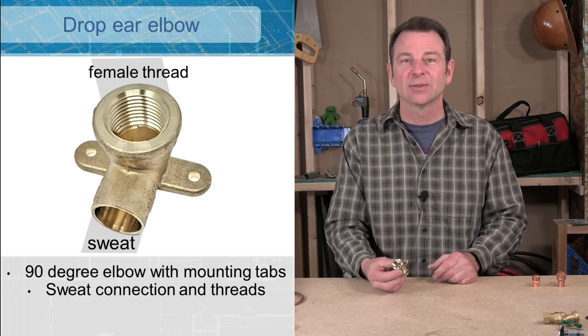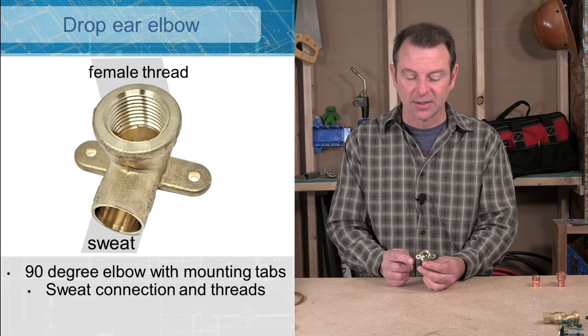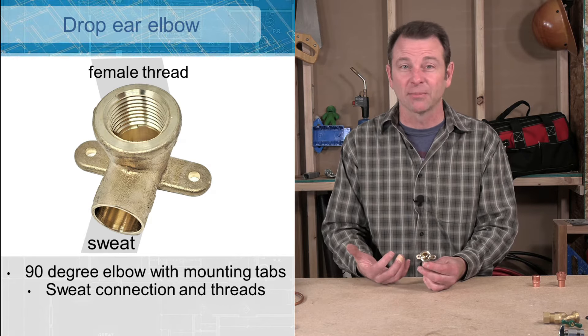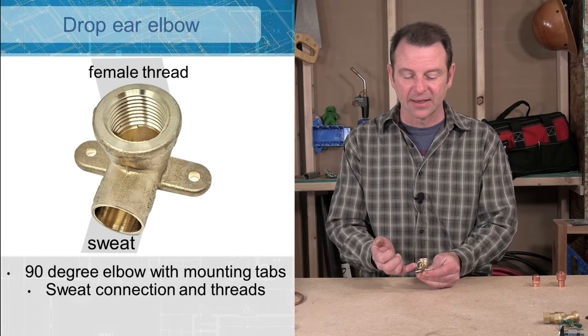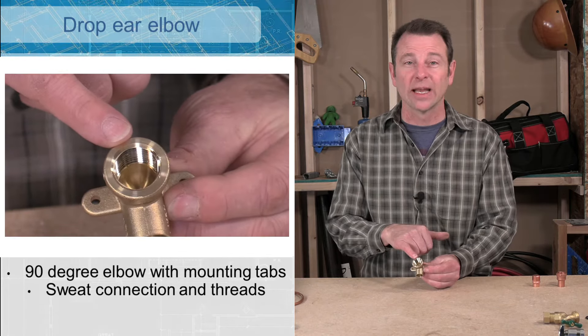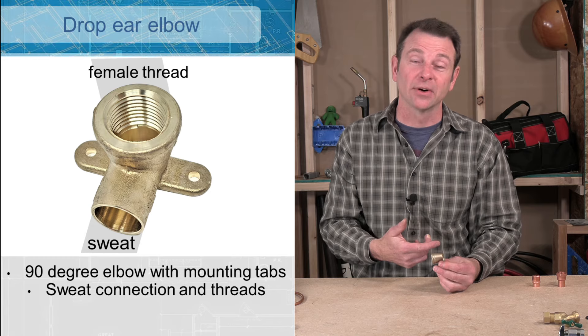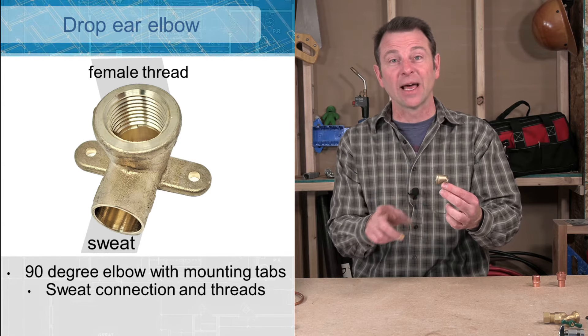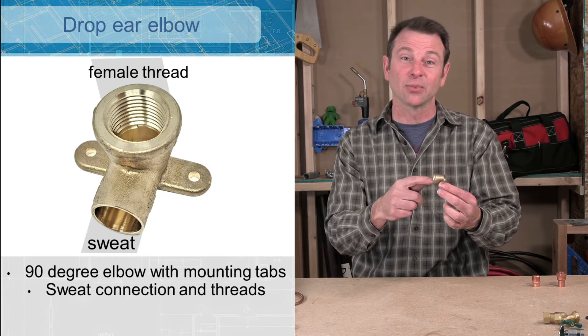I have another transition fitting here. This one has a funny name. You would call it a drop ear elbow. And it has a couple of tabs on it with holes that you would screw it to some framing. This would secure this pipe. We're always trying to secure our pipe to keep it in place and keep it from breaking loose and leaking. And it also has a sweat fitting on this side and a female thread NPT thread on this side. This is half inch NPT. A good example of when you would use a drop ear elbow would be in a shower. This is a common part. The pipe would come up from the valve and then your shower head would come out of this connection right here. A typical shower head would have a screw in or a male NPT thread connection that would go in here. That's a rundown of some basic fittings.